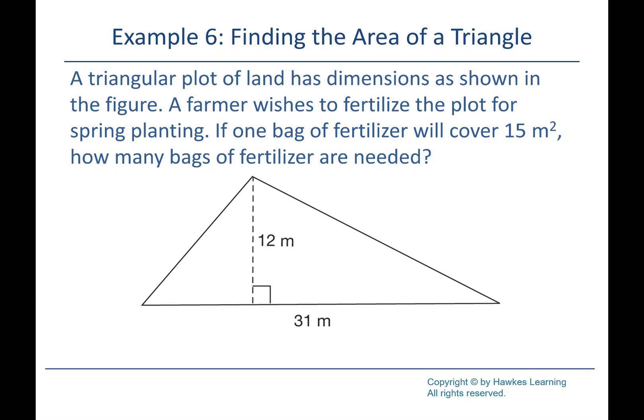We've done a little bit of triangle stuff, but here's one more. We've got a triangular plot of land with given dimensions, and we want to fertilize the plot. One bag of fertilizer covers 15 square meters — how many bags do we need? Since we're covering it, that's an area problem. Area of a triangle is one-half base times height. Here 12 is our height, B is 31.